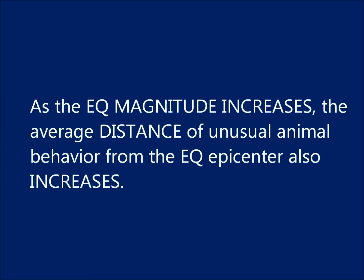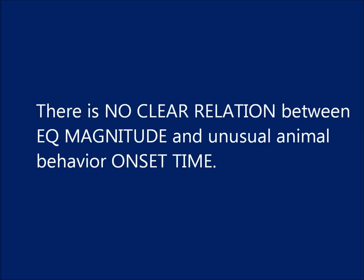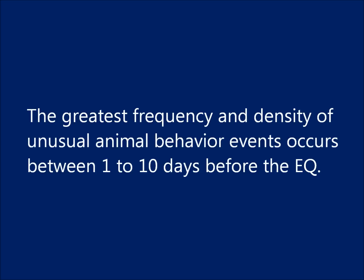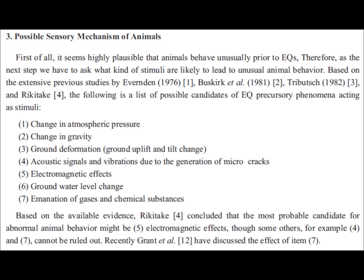To review what we found so far: as the earthquake magnitude increases, the average distance of unusual animal behavior from the epicenter also increases. There is no clear relation between earthquake magnitude and unusual animal behavior onset time. The greatest frequency and density of unusual animal behavior events occurs between 1 to 10 days before the earthquake. All of this is important to keep in mind because we are going to look at data of electromagnetic effects that occur before earthquakes and compare them to how animals behaved, to note similarities in onset time and distance.